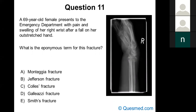Question eleven: a 69-year-old female presents with pain and swelling of her right wrist after a fall onto her outstretched hand. The radiograph is shown. What is the eponymous term for this fracture? Eighty-four percent said Colles' fracture and 7% said Smith's fracture.